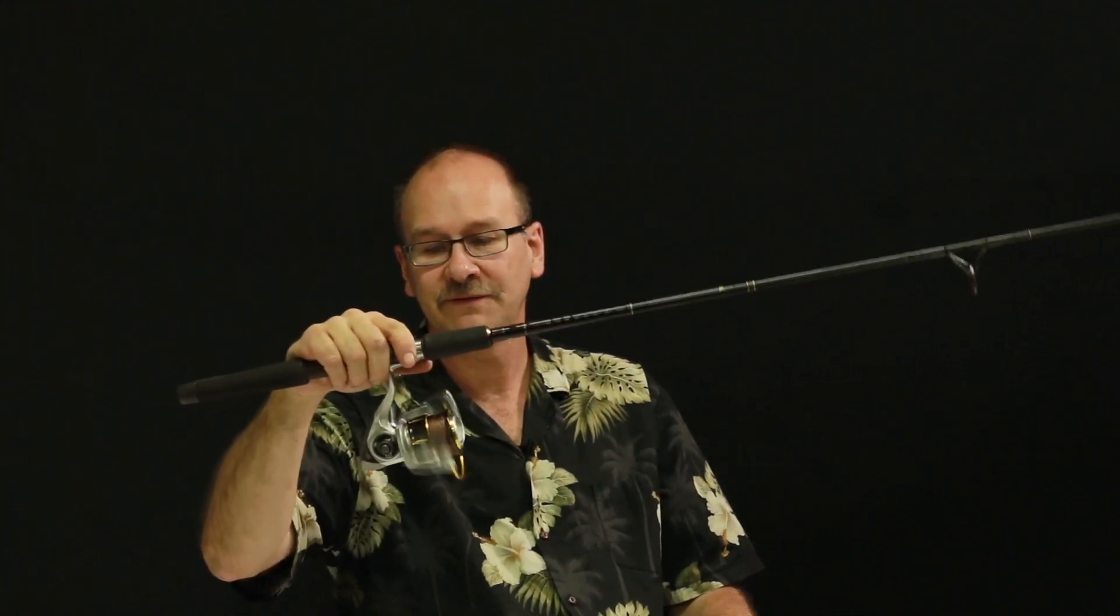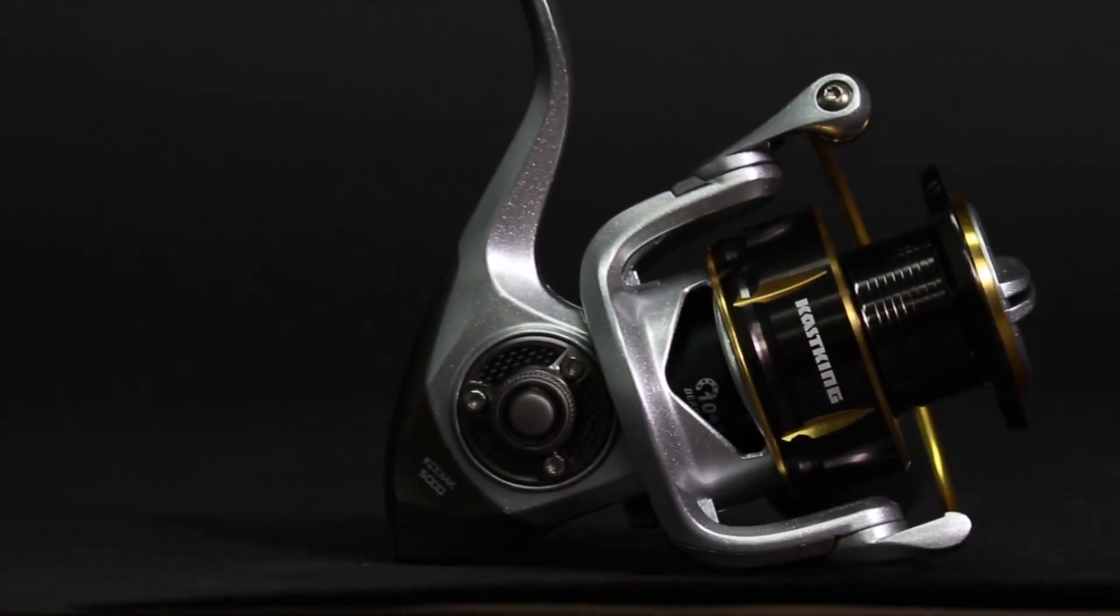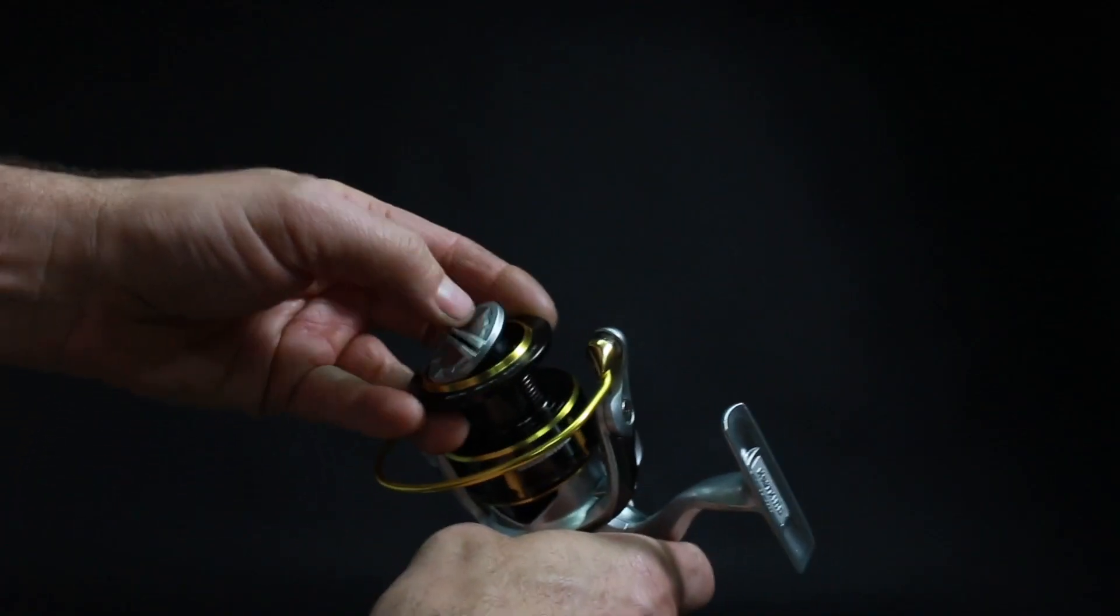And it's very well balanced. Even the little fighting knob, it's like if you're not catching fish, you can use it as a fidget spinner. It'll spin forever. It's got ten plus one ball bearings, the plus one being the anti-reverse. So, let's open this thing up and see what it's made like.